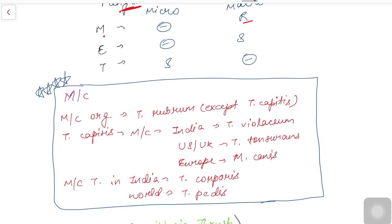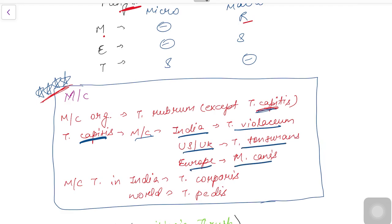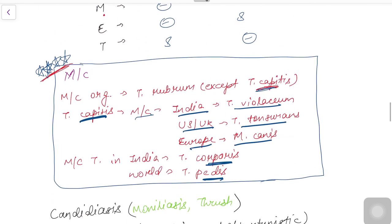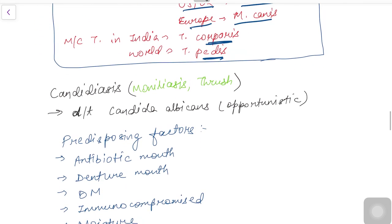Very importantly: the most common organism causing any type of tinea is Trichophyton rubrum, EXCEPT tinea capitis, for which the most common organism varies by geography. In India it is Trichophyton violaceum, in the US/UK it is Trichophyton tonsurans, and in Europe it is Microsporum canis. The most common tinea in India is tinea corporis, while worldwide it is tinea pedis.